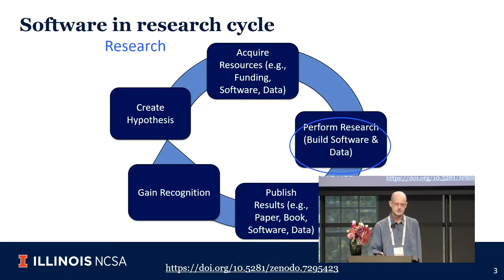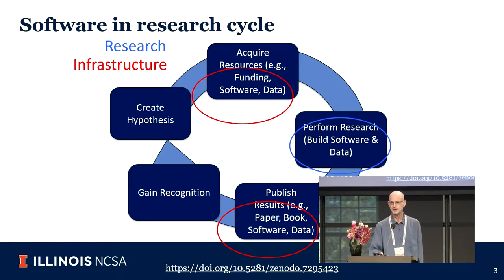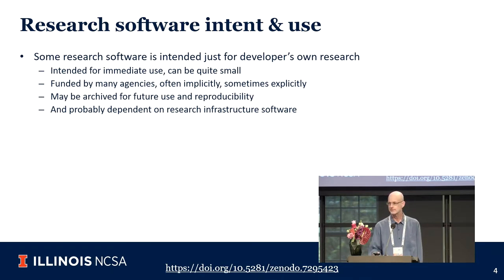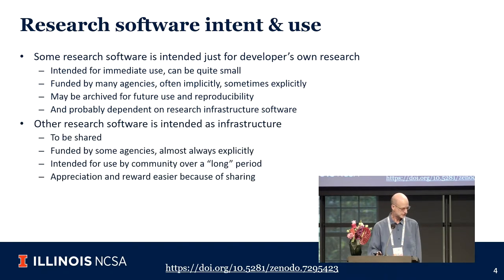Software shows up in the research cycle in a couple of places: as part of the research itself, and as infrastructure — things that go into the research from somebody else, and things that come out of the research to other people. Some research software is really developed as part of the research; if you ask a funder, they may or may not know that software is being developed — the highlight is the scientific knowledge being gained. This software may also be archived for reproducibility.